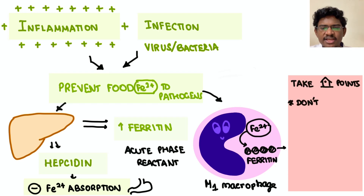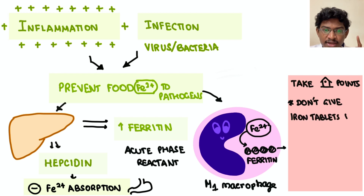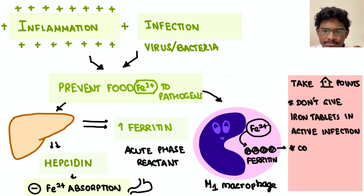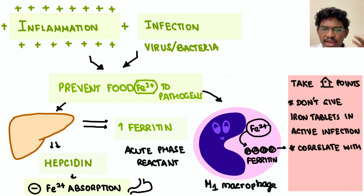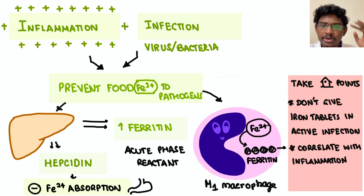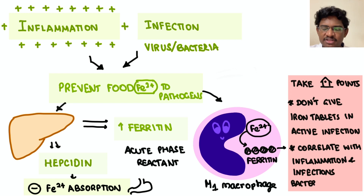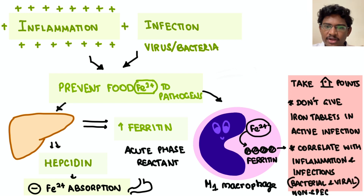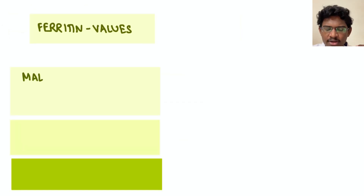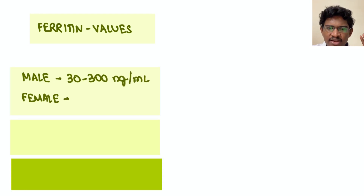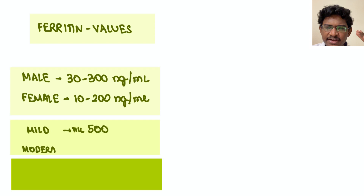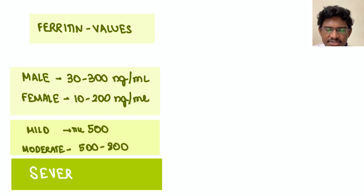The take-home message: never ever give iron tablets when a patient is having an active infection or inflammation. Also, ferritin is not specific to any one condition — any inflammation, viral infection, or superimposed bacterial infection can elevate ferritin levels. So don't rely only on ferritin in COVID. Normal values: in males 30 to 300, in females 20 to 200. If elevated to 500, 800, or more than 800, it indicates severe elevation.